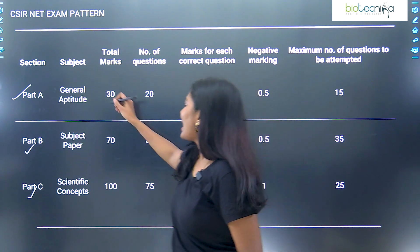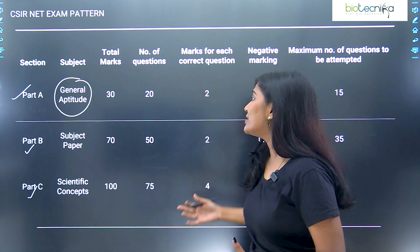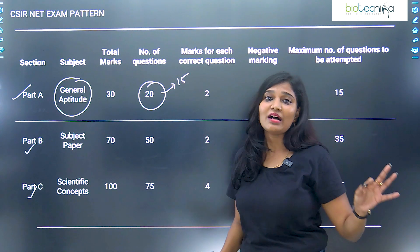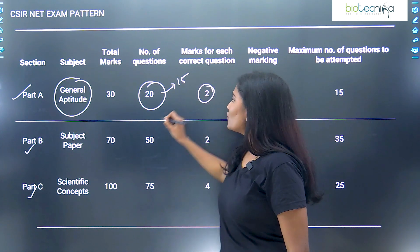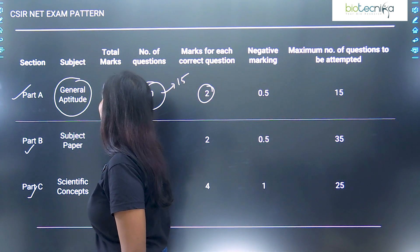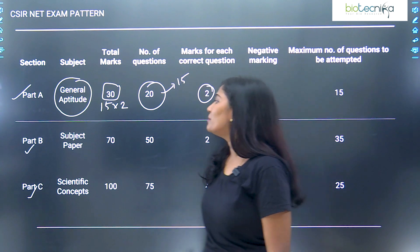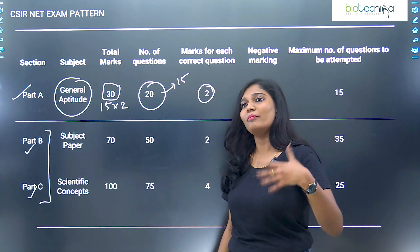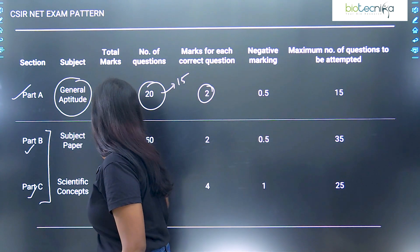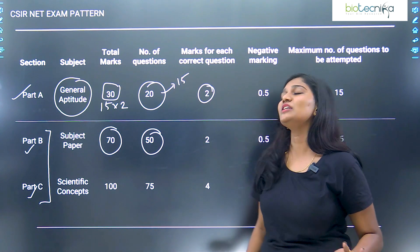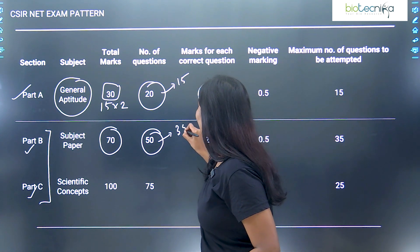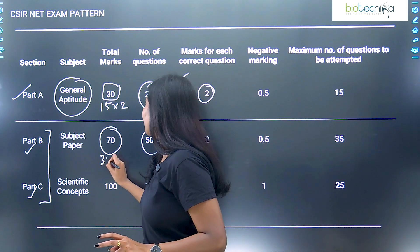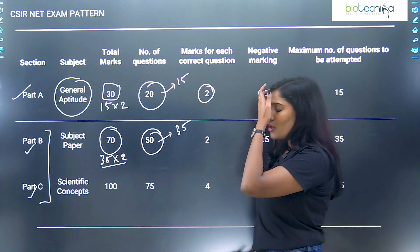Part A mainly covers general aptitude, which includes mathematics. There are 20 questions total, out of which you attempt 15 questions, and for every correct answer you get two marks — so 15 into two gives 30 marks in Part A. Part B and Part C mainly comprise your subject — chemical sciences, life sciences, earth sciences, or mathematics. Part B has 50 questions, out of which you attempt 35 questions, and for every correct answer you get two marks, giving 35 into two, which is 70 marks.